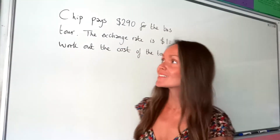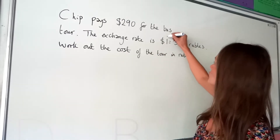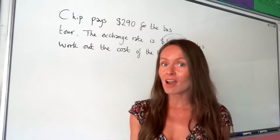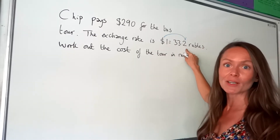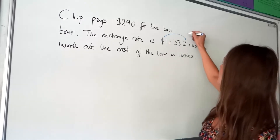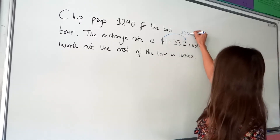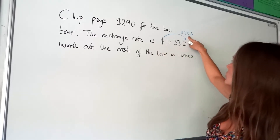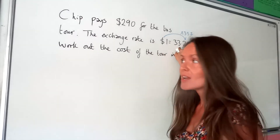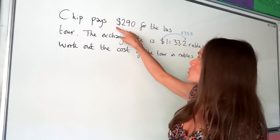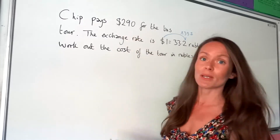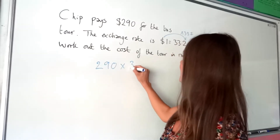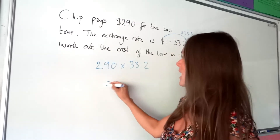In this second exam question we're changing dollars into rubles. Remember it's always times or divide by the number that's not one when we look at the exchange rate. In this one it's multiplying, because if I multiply the number one by 33.2 it gives me 33.2. So I have to do exactly the same thing with those 290 dollars that Chip is paying for the bus tour: 290 multiplied by 33.2.